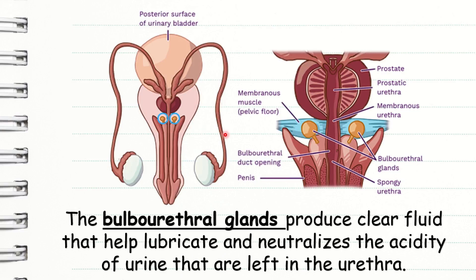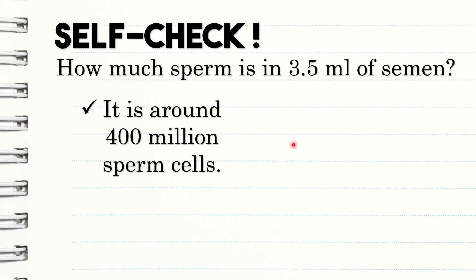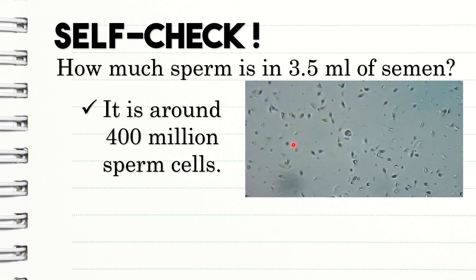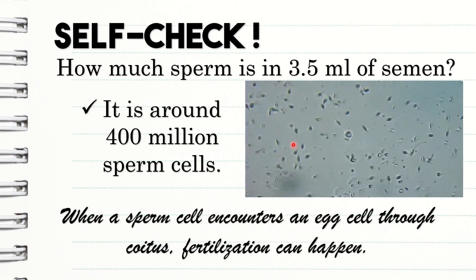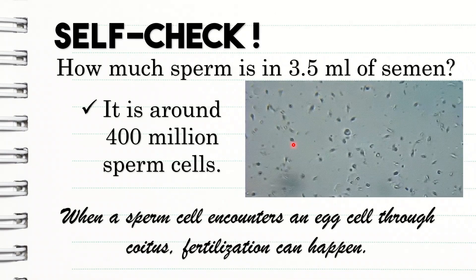Next, the bulbourethral glands, located on each side of the urethra and just below the prostate gland, produce clear fluid that helps lubricate and neutralize the acidity of urine left in the urethra. Look at the picture class — this is the bulbourethral glands. Another self-check: how much sperm is in 3.5 ml of semen? The answer is around 400 million sperm cells. That's a lot! And when a sperm cell encounters an egg cell through coitus, fertilization can happen.